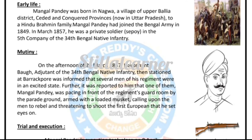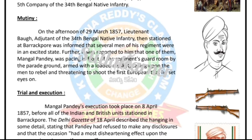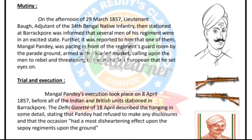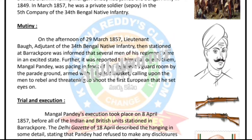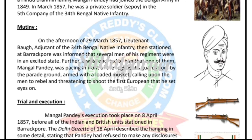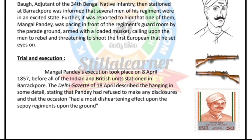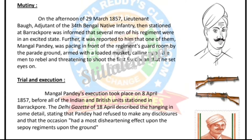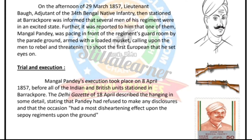Trial and execution: Mangal Pande's execution took place on 8th April 1857, before all of the Indian and British units stationed in Barrackpore. The Delhi Gazette of 18th April described the hanging in some detail, stating that Pande had refused to make any disclosures and that the occasion had a most disheartening effect upon the sepoy regiments upon the ground.